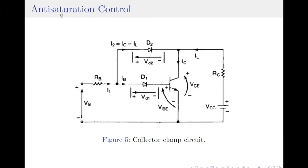Lastly, we move on to anti-saturation base drive control technique. In high-voltage BJTs, the amount of storage time is a function of minority carrier concentration in the base region just before turn-off, and fall time is a function of base drive current turn-off characteristic. The storage time can be decreased by minimizing the concentration of minority charge carriers in the base region. This can be accomplished by operating the transistor in soft saturation or quasi-saturation rather than hard saturation. One of the techniques that can be used to achieve this is the Baker's clamp. A typical circuit arrangement for the clamping action is as shown in figure 5 here.